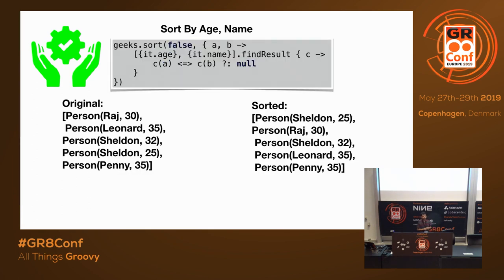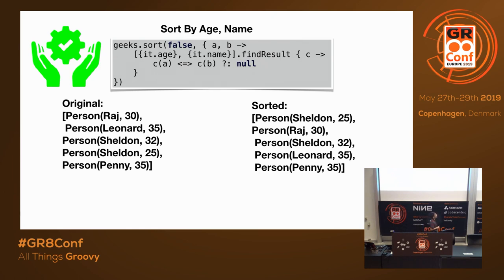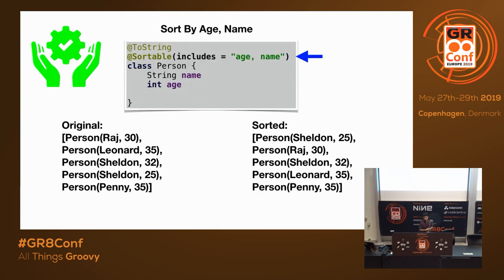A groovier solution is to use findResult — you have a list of closures where each closure retrieves a specific field value. First by age, then by name in that order. findResult will keep going until it finds a non-zero result, effectively implementing the same technique in a more readable way. With Groovy version 2.4, there is an AST transformation called @Sortable where you specify the fields and things become fairly easy.